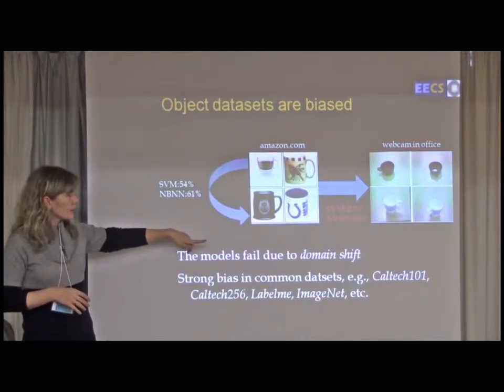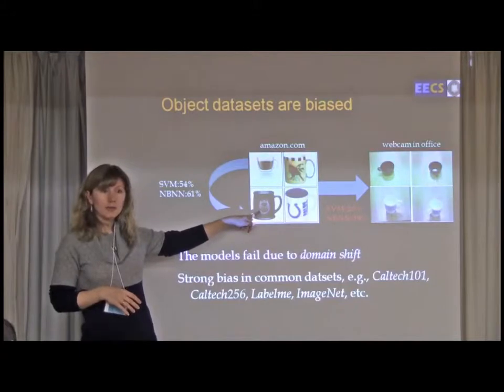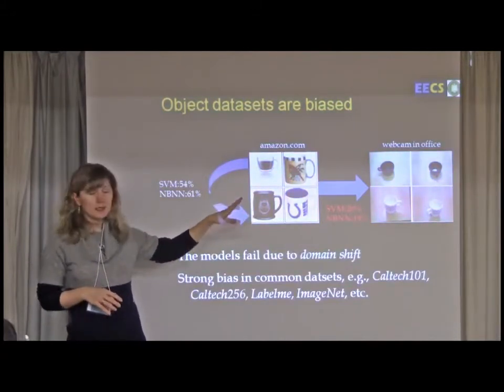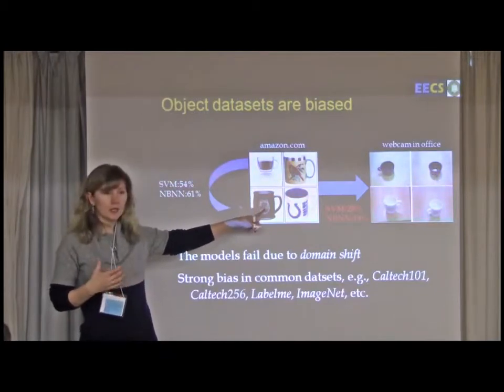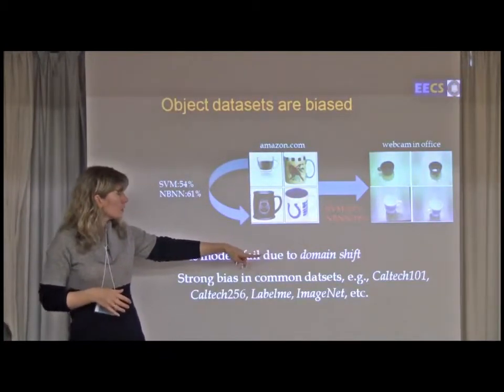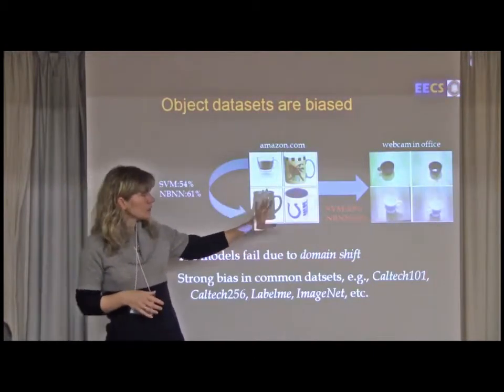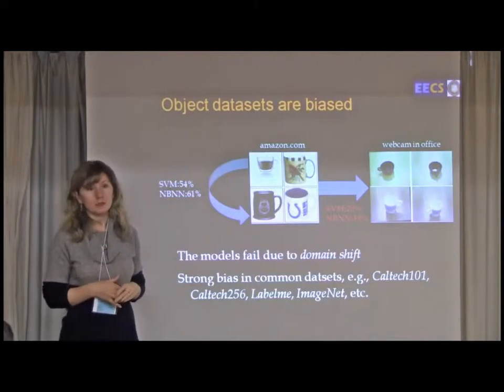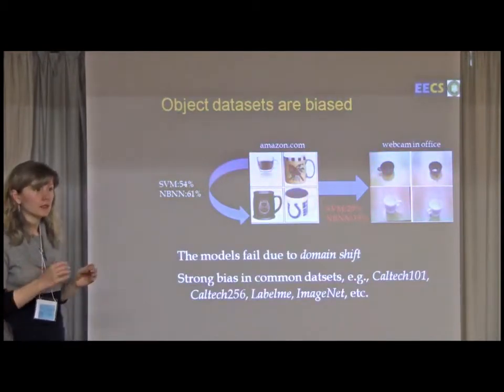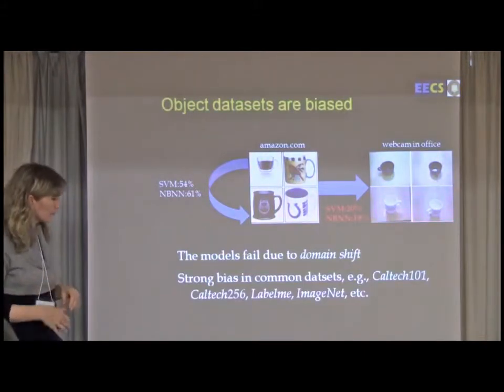Here I'm showing you an example that happens if you train and test on Amazon.com type images. We're trying to classify object categories, here's one category, a cup. We're doing okay, but if we use models trained on this data to classify cups in a new domain like an office with a mobile robot with a webcam, then our performance drops quickly by a lot.